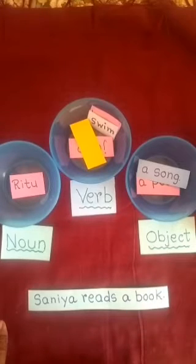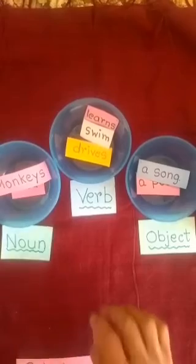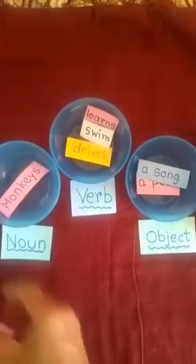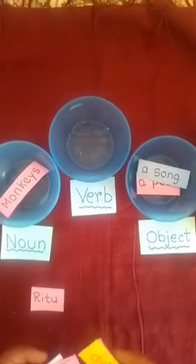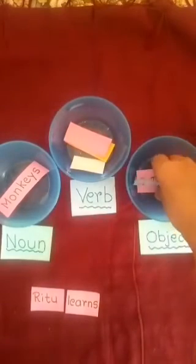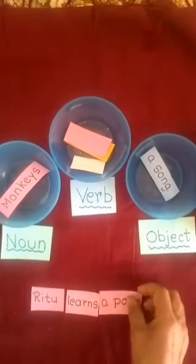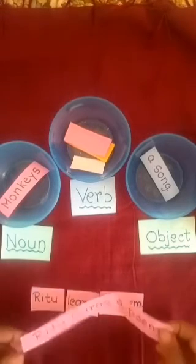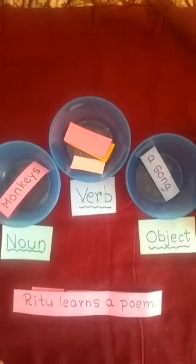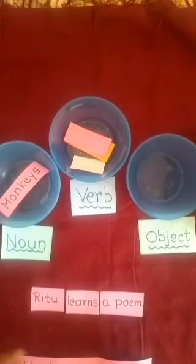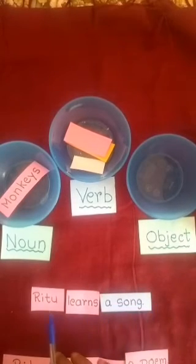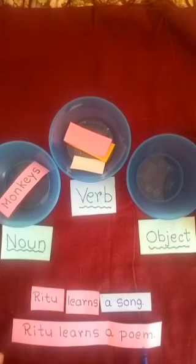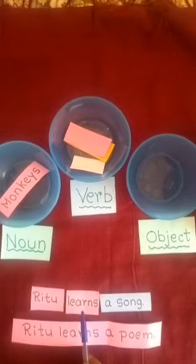Have you understood? Are you enjoying the game, children? Next sentence: Ritu. Let us see the verb — what is Ritu doing? Ritu learns. Now what does she learn? Learns a poem — yes, this is correct. So: Ritu learns a poem. I have one more object that can go with this also: Ritu learns a song. So this is also correct. Both sentences can be correct — Ritu learns a song and Ritu learns a poem. Both objects go with the verb learns.